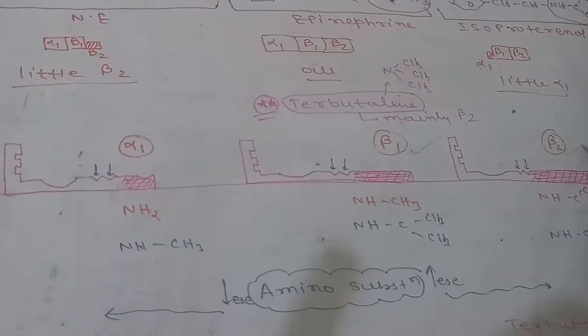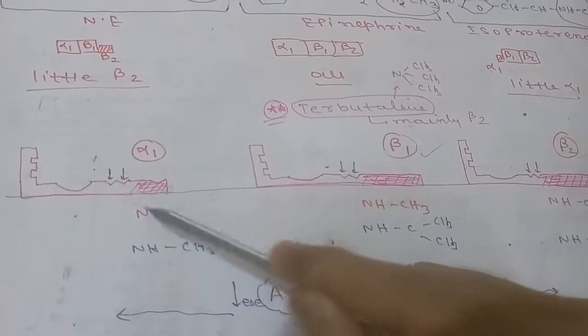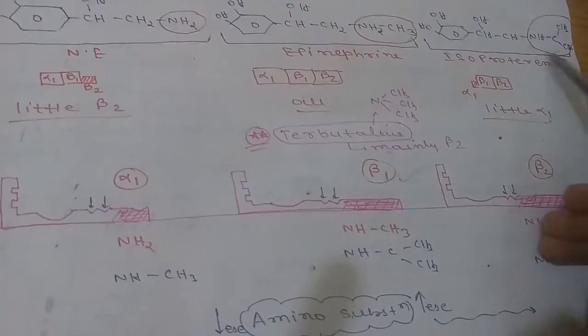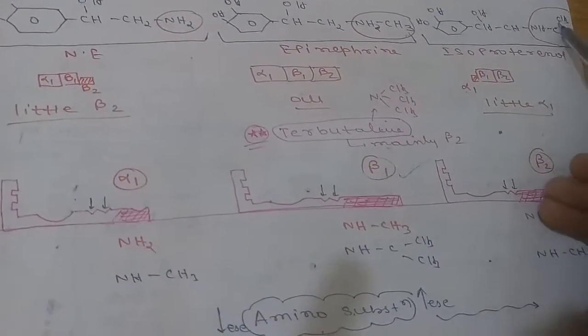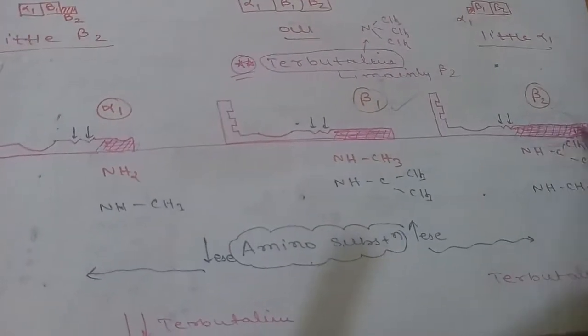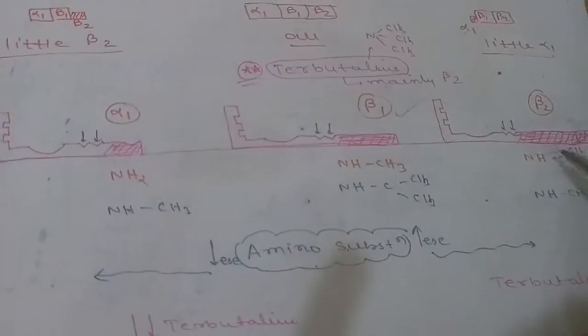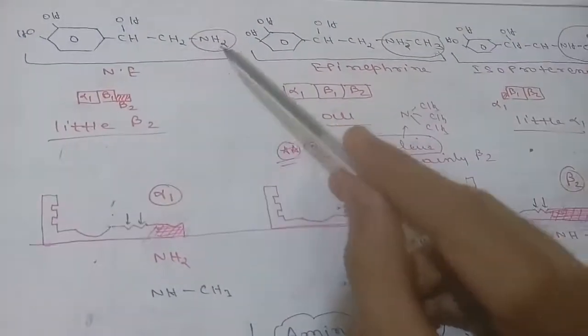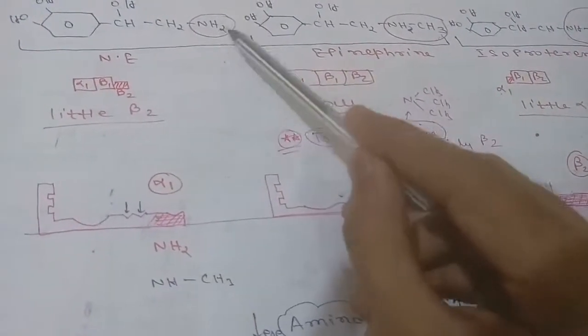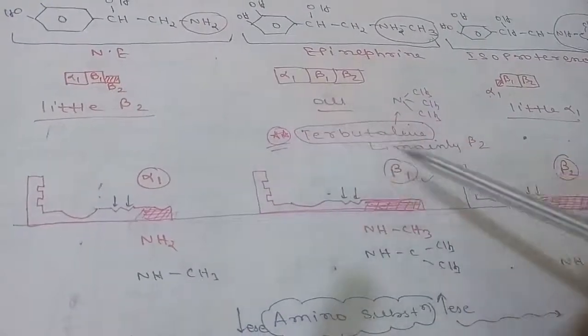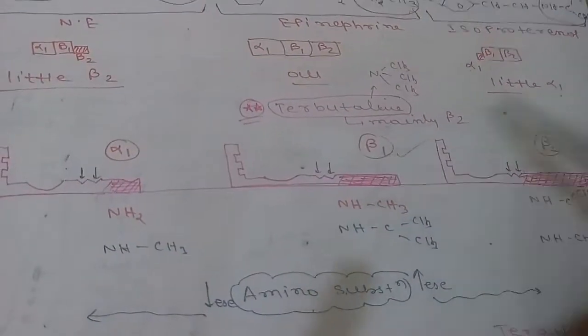The receptor has three types: alpha-1, beta-1, and beta-2 receptors. A specific part of the receptor is for binding the amino-substituent group. Norepinephrine has only an amine — a very small, non-bulky group — so it binds easily to alpha-1 and beta-1. Isoproterenol has a much larger isopropyl group, giving more surface area for the amino-substituent binding site, so it binds more easily to beta-2.